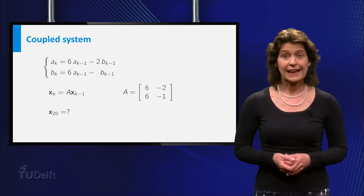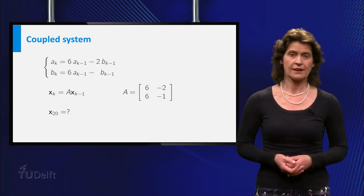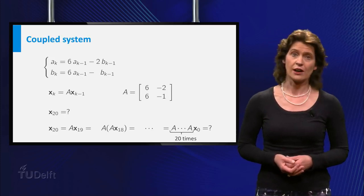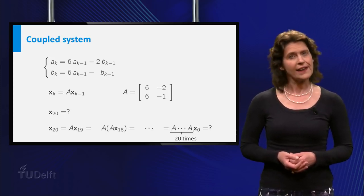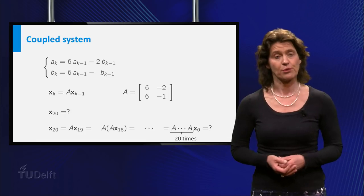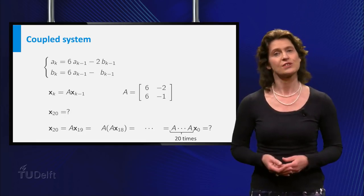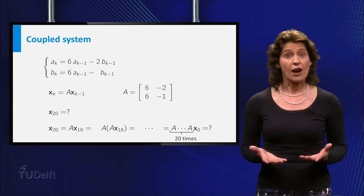But computing x20 is. Actually doing the matrix multiplications 20 times is hard work. Why is this harder than in the previous example? Well, in the previous example the matrix you used was a diagonal matrix, and now it is not.